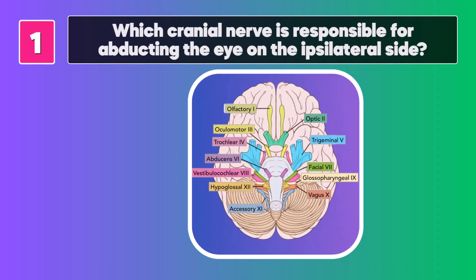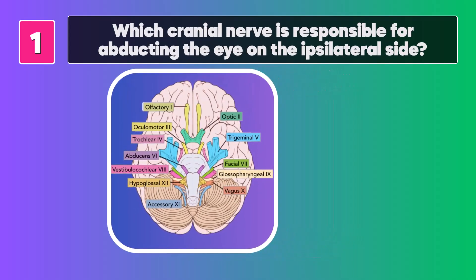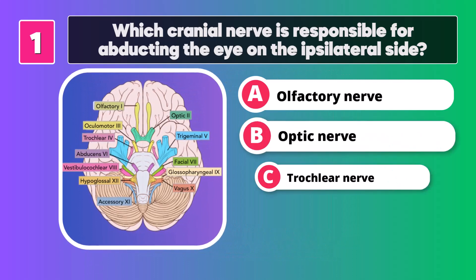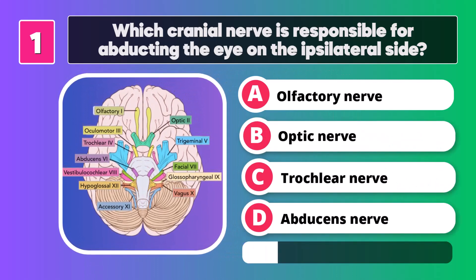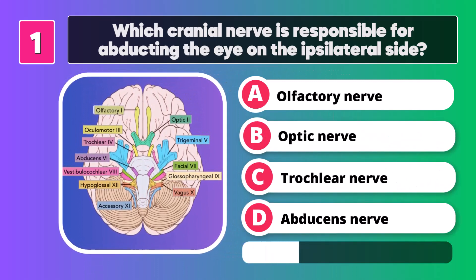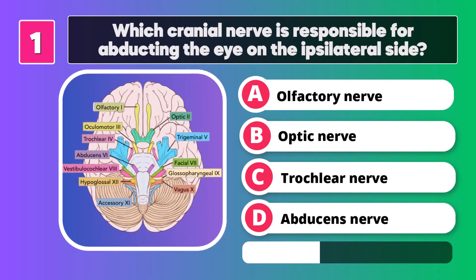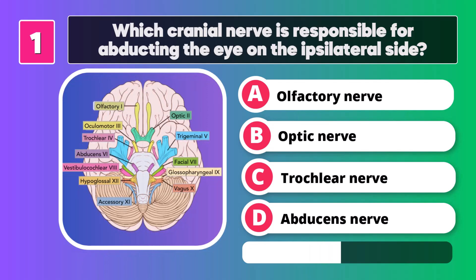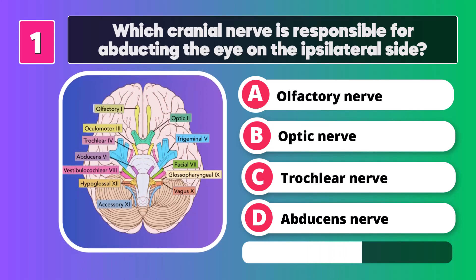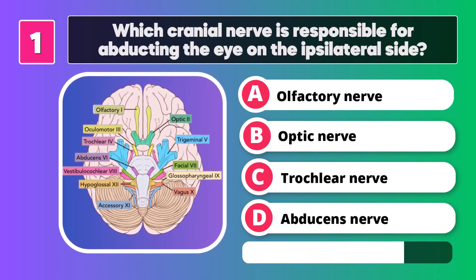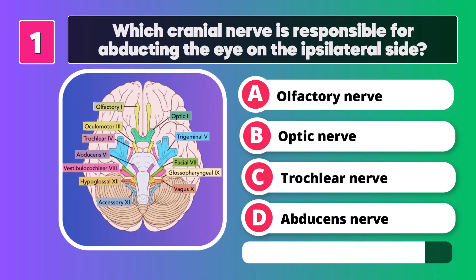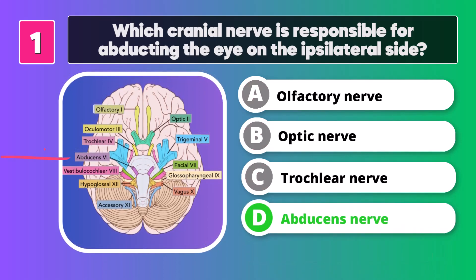Which cranial nerve is responsible for abducting the eye on the ipsilateral side? Abducens nerve.